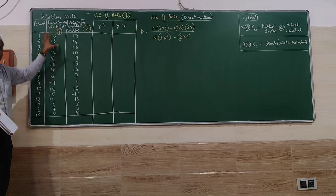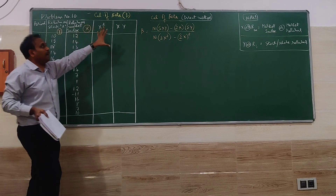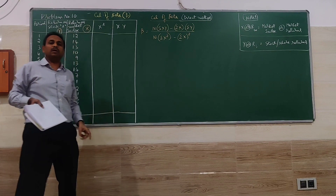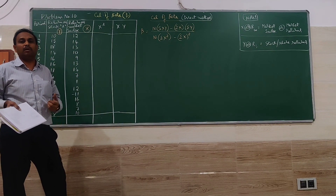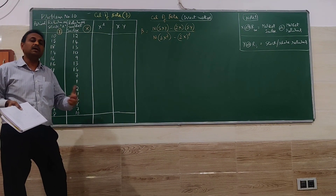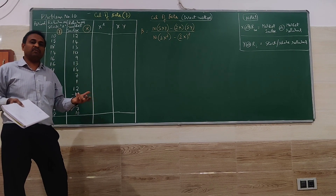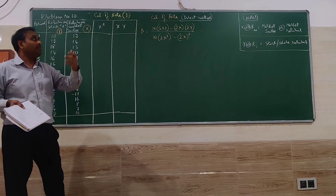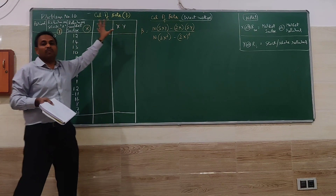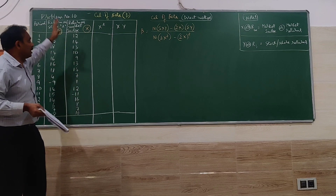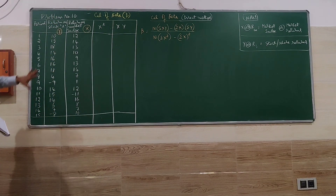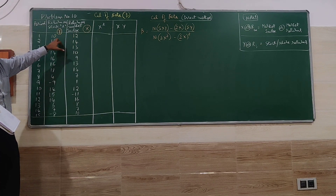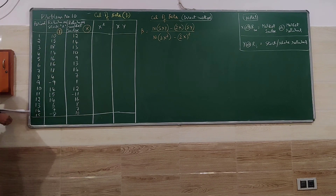Let me go for the working. I am doing the calculation of beta under the direct method — the easiest method to work. We can work the indirect method also, like the previous one we have done, where we use deviation from X and deviation from Y. That can also be done, but here the formula is a little bit bigger and the working becomes easier when the number of items is more. So market index is X and stock return is Y.